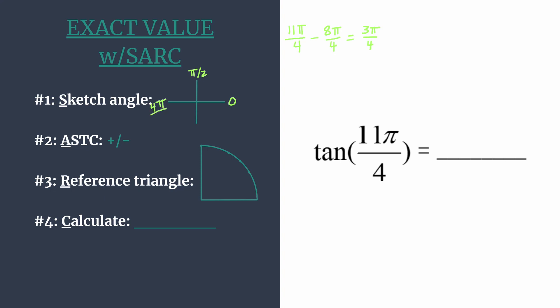If it helps to rewrite π as 4π over 4, you could do that. So we know that 3π over 4 falls between π over 2 and a full π. Here is the terminal side of our angle, both of 3π over 4 and 11π over 4.